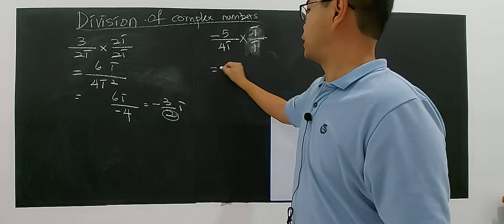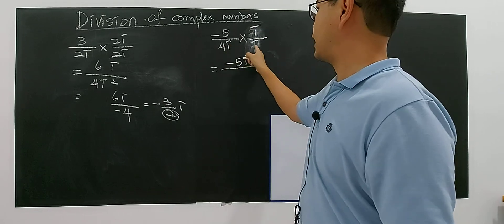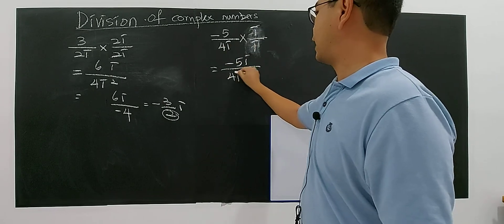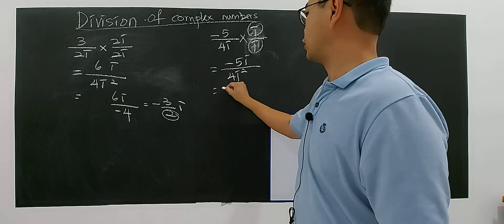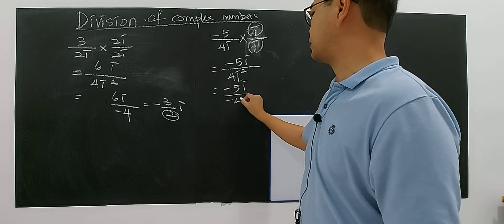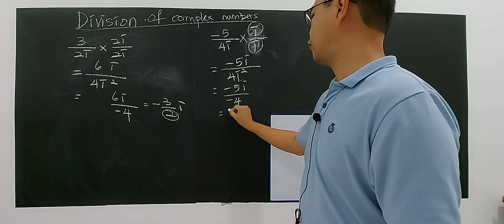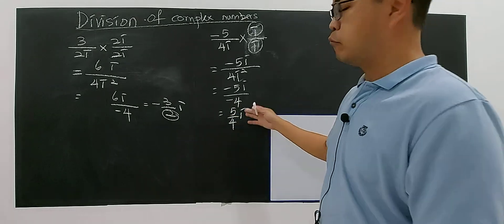Imagine 2i over 2i, 3i over 3i. So you multiply, you got negative 5i on top, below you got 4i times i, you got 4 i squared. But this has to be identical. So you got negative 5i over - i squared is negative 1 - so you got negative 4.